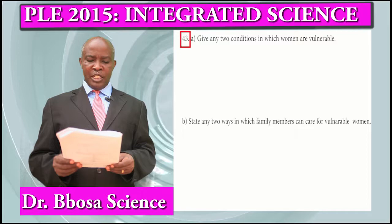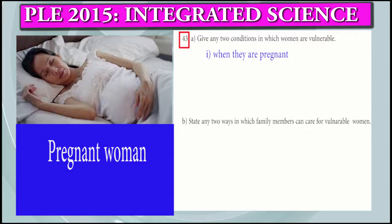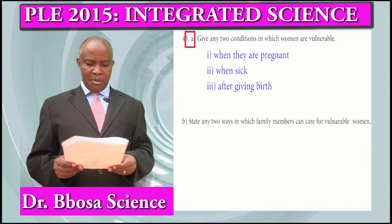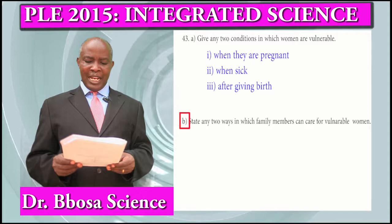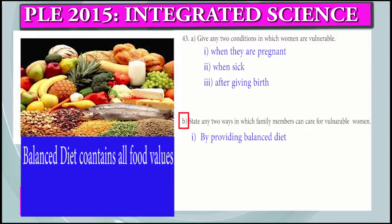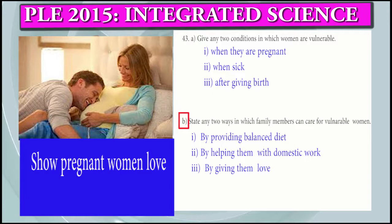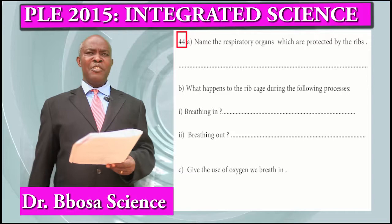Question 43a: Give two conditions in which women are vulnerable. When they are pregnant. When they are sick. After giving birth. Question 43b: State two ways in which family members can care for vulnerable women. By providing a balanced diet. By helping them with domestic work. By giving them love. By guidance and counseling.